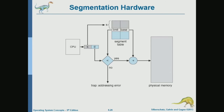Each entry will have a base and a limit. The base is the start address of that segment. The limit — what do you think the limit is? The limit is the length or size of the segment, or equivalently the maximum offset within that segment. So base plus limit gives you the ending point of the segment.